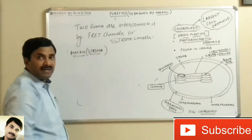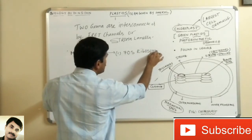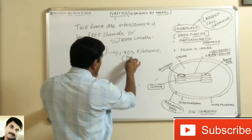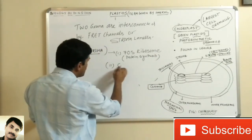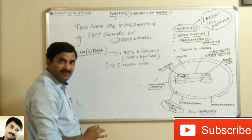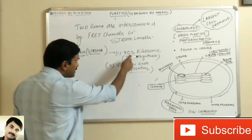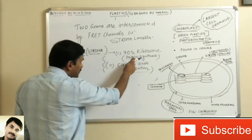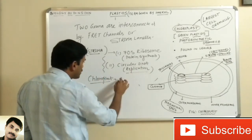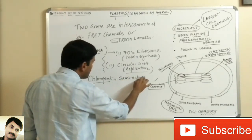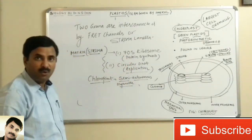The stroma part is where the dark reaction occurs. This part consists of 70S ribosomes, and because of these ribosomes it has the power of protein synthesis. It also has circular DNA just like prokaryotes, giving it the power of replication. Because of these two features — protein synthesis and replication — the chloroplast is called semi-autonomous, just like mitochondria.